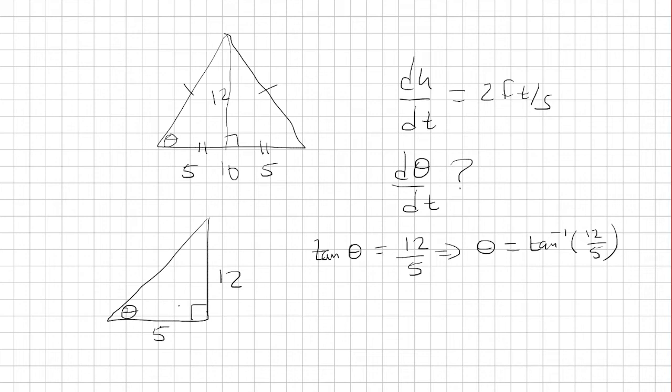And if you want, if you have your Pythagorean triples memorized, this is 13. So this is a 5, 12, 13 triangle. If you don't have it memorized, you could just use the Pythagorean theorem to figure out the hypotenuse.